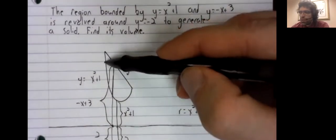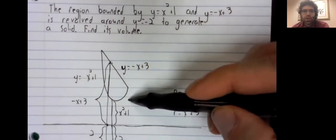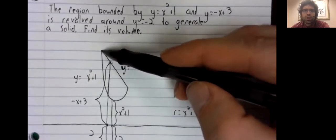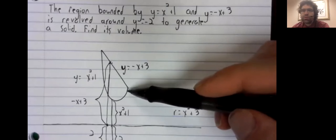We are going from here to here. Both these limits occur where these two curves intersect.